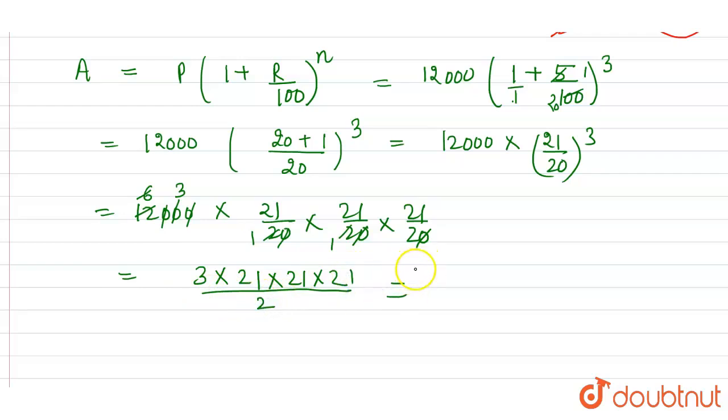So 21 into 21, the squares we have already discussed, 21 into 21 is 441. 441 and 21 into 3 is 63 divided by 2. Now let's calculate 441 times 63.